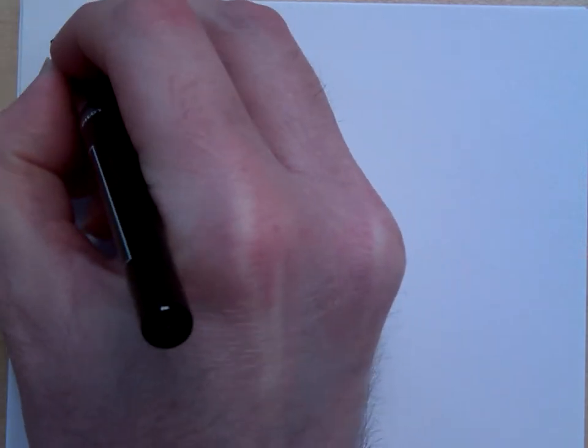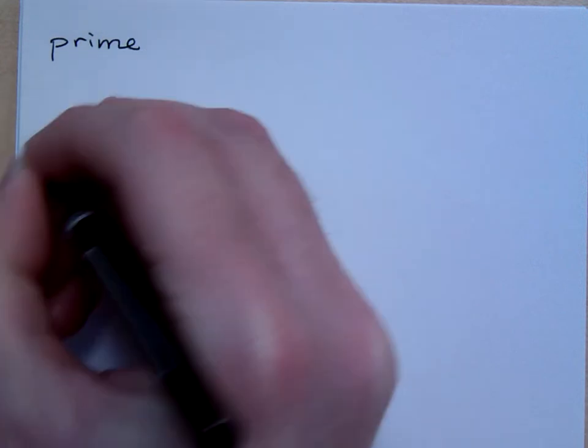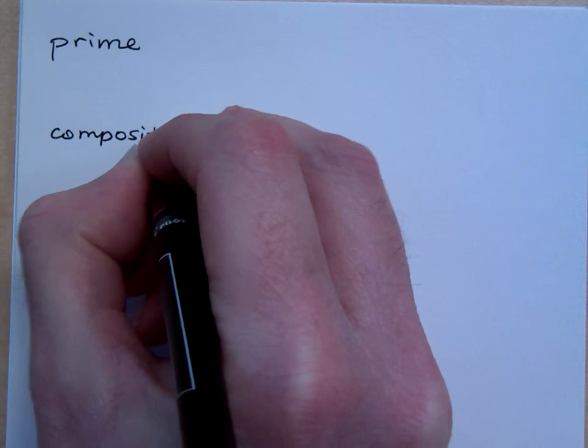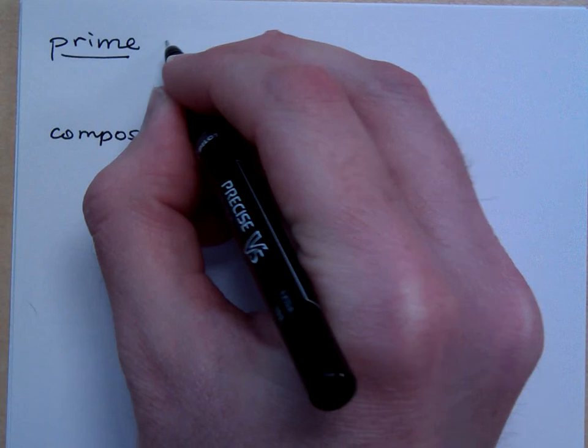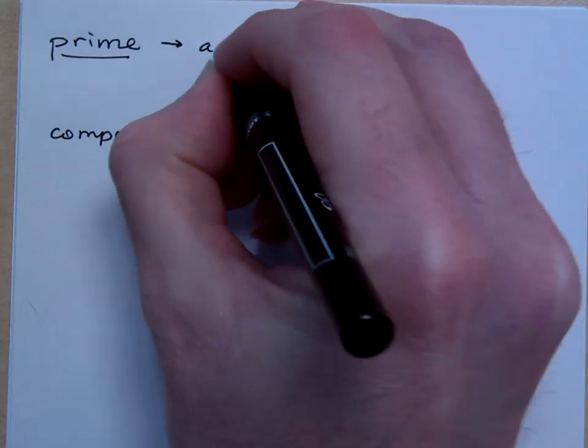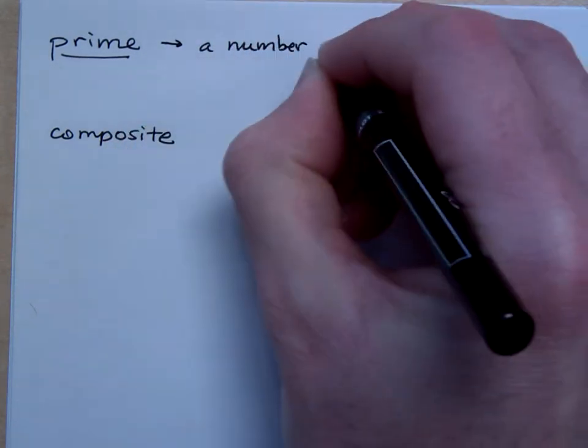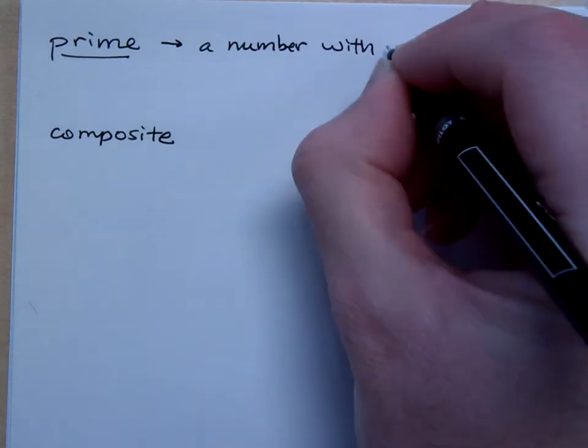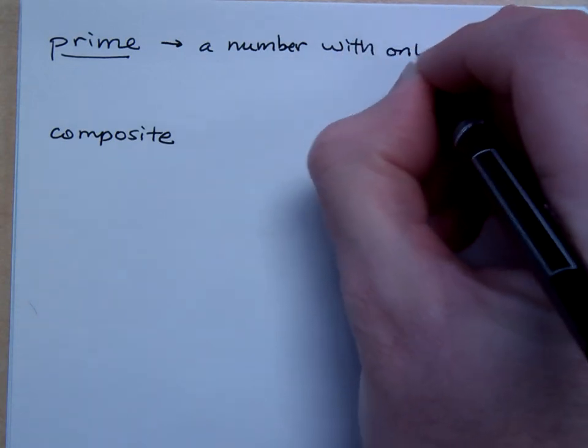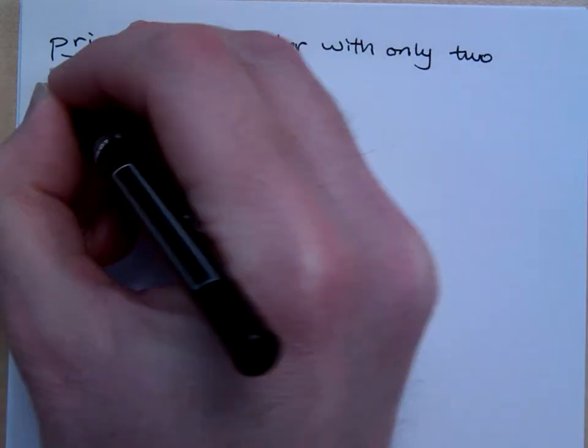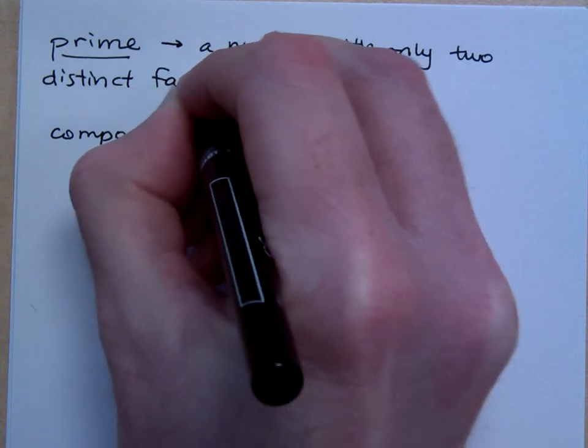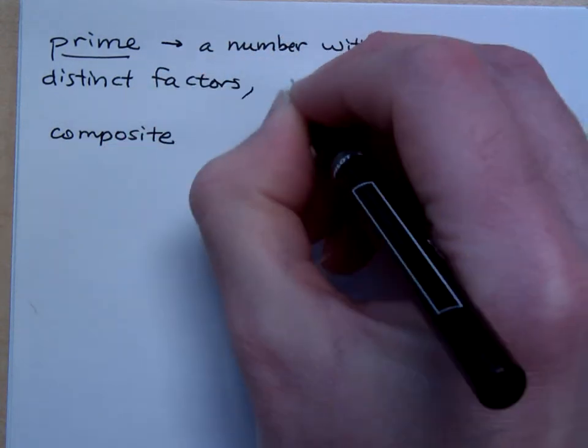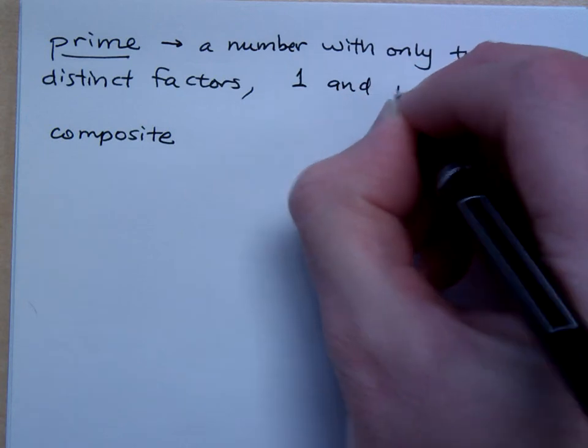Now, we need to understand the difference between these two words, prime and composite. A prime number, okay, this is a number with only two distinct factors, that being one and itself.